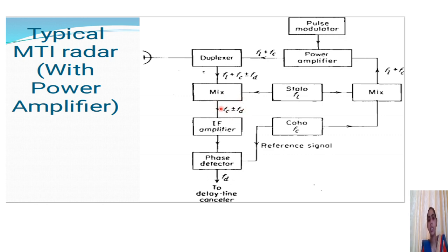This is fed to an IF amplifier and a phase detector. We do not employ amplitude limiters here. For comparing the phase, a reference signal from the coherent oscillator is provided. The output of the phase detector gives the Doppler frequency FD information, which is then fed to the delay line canceller.